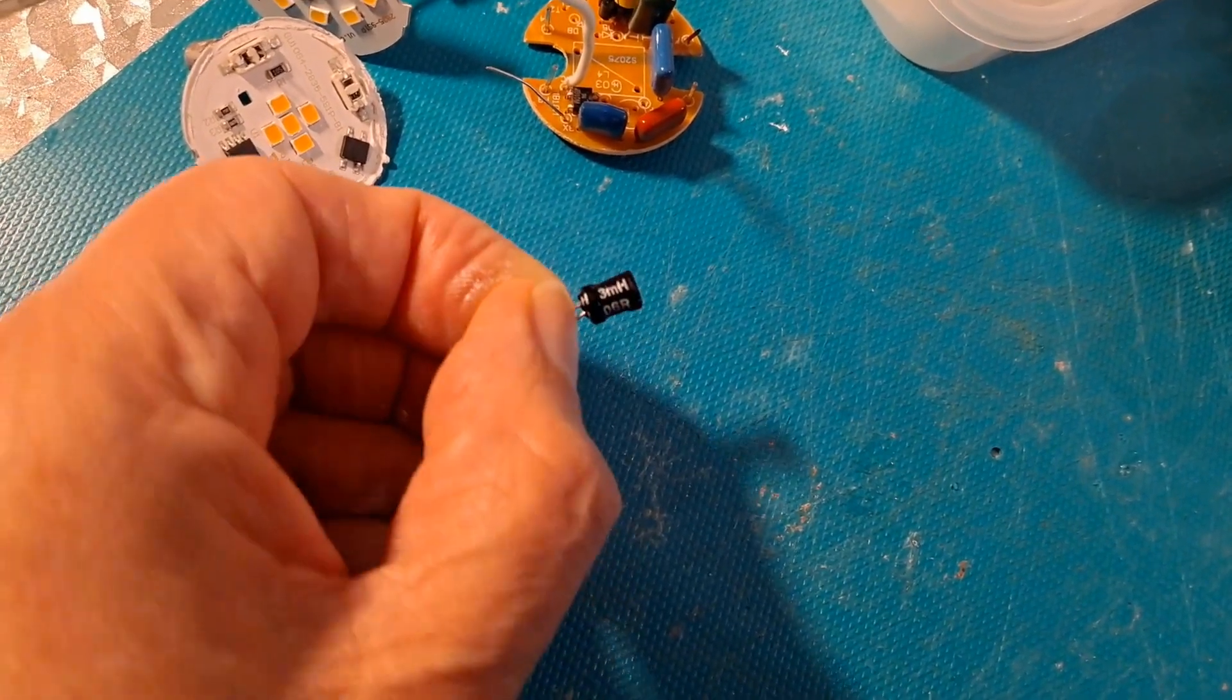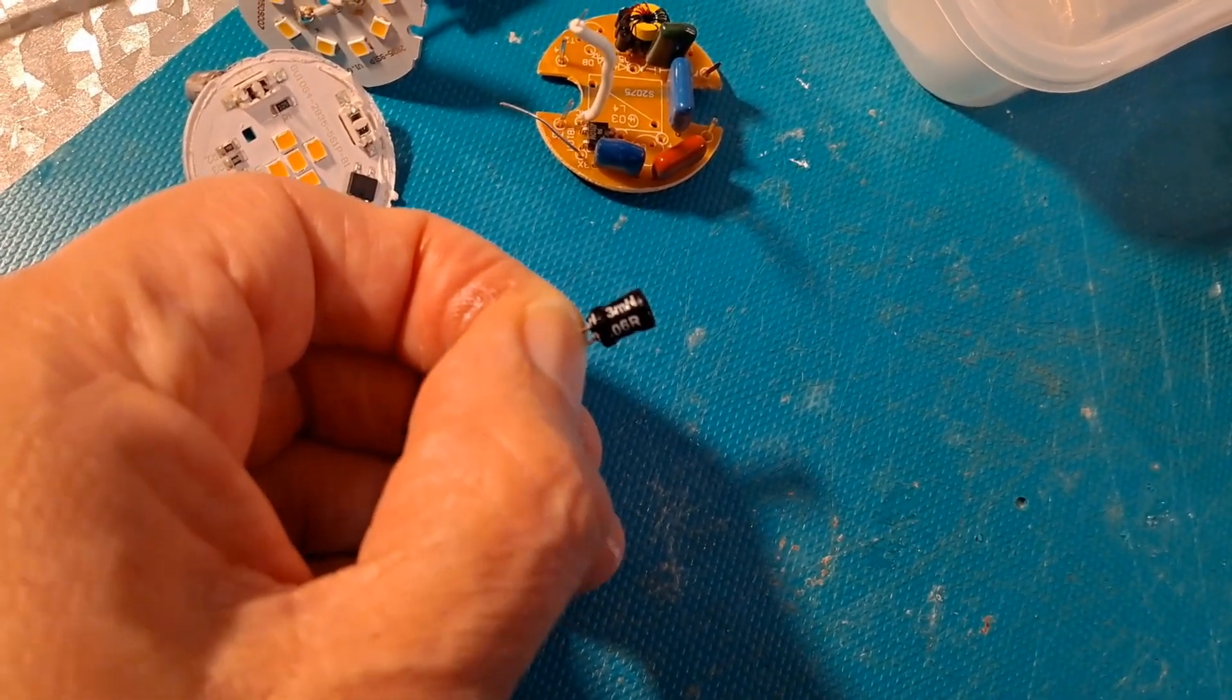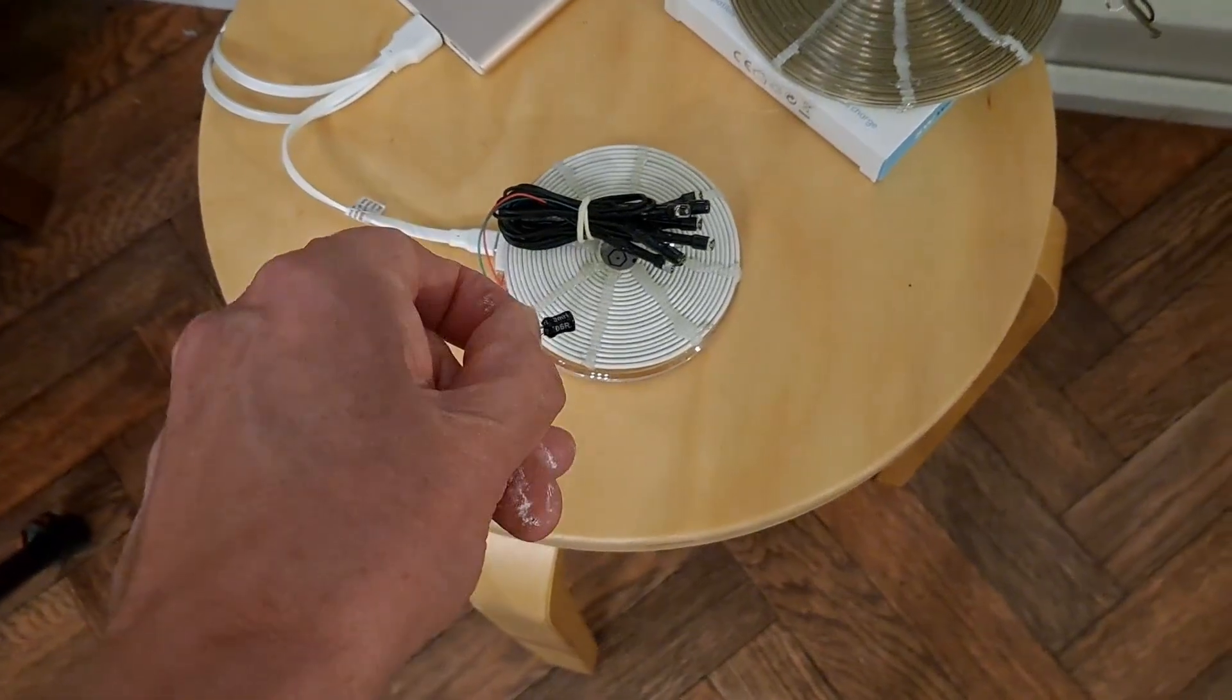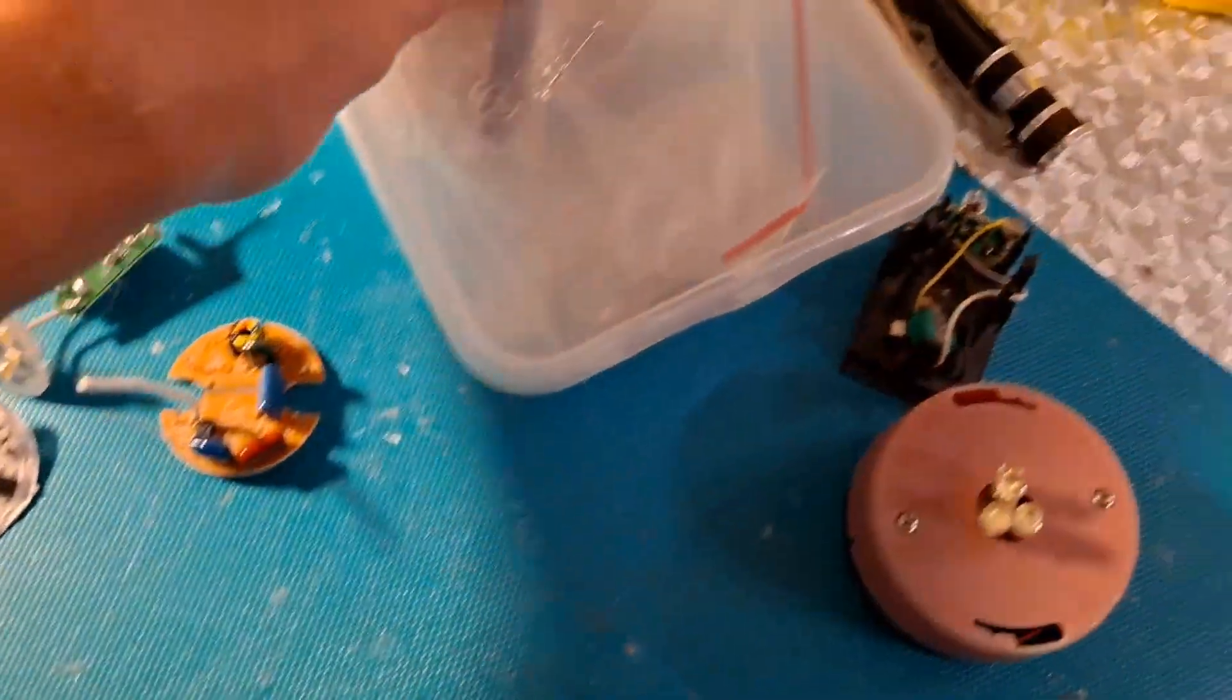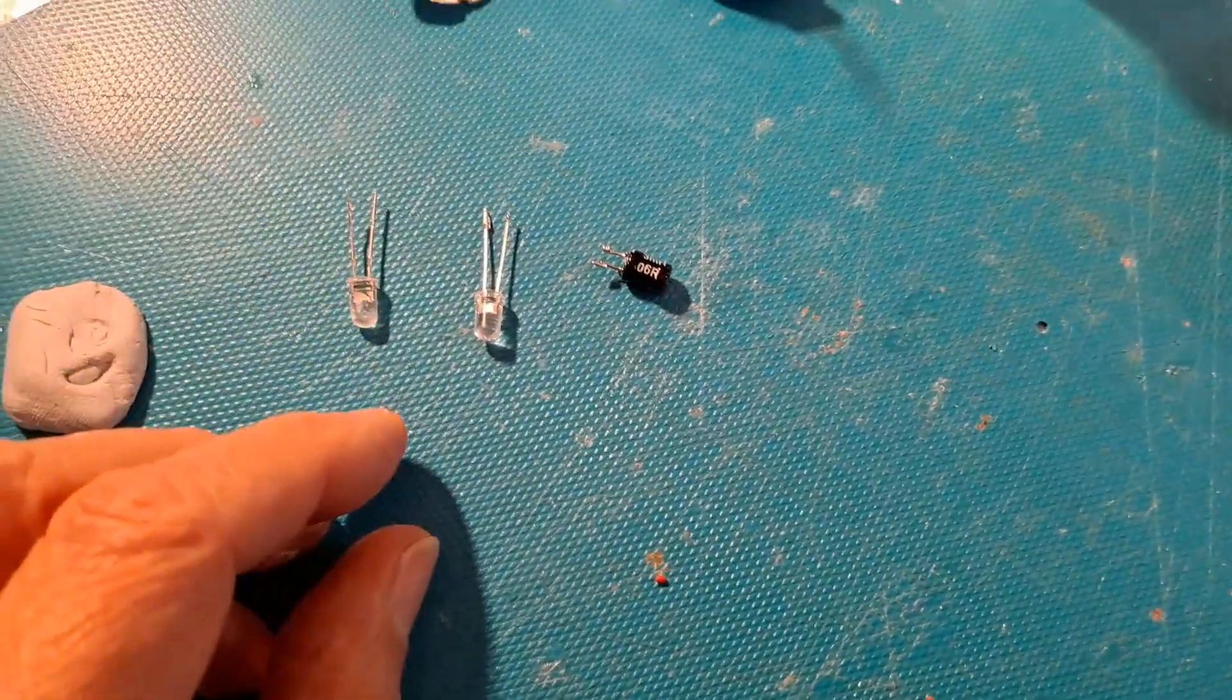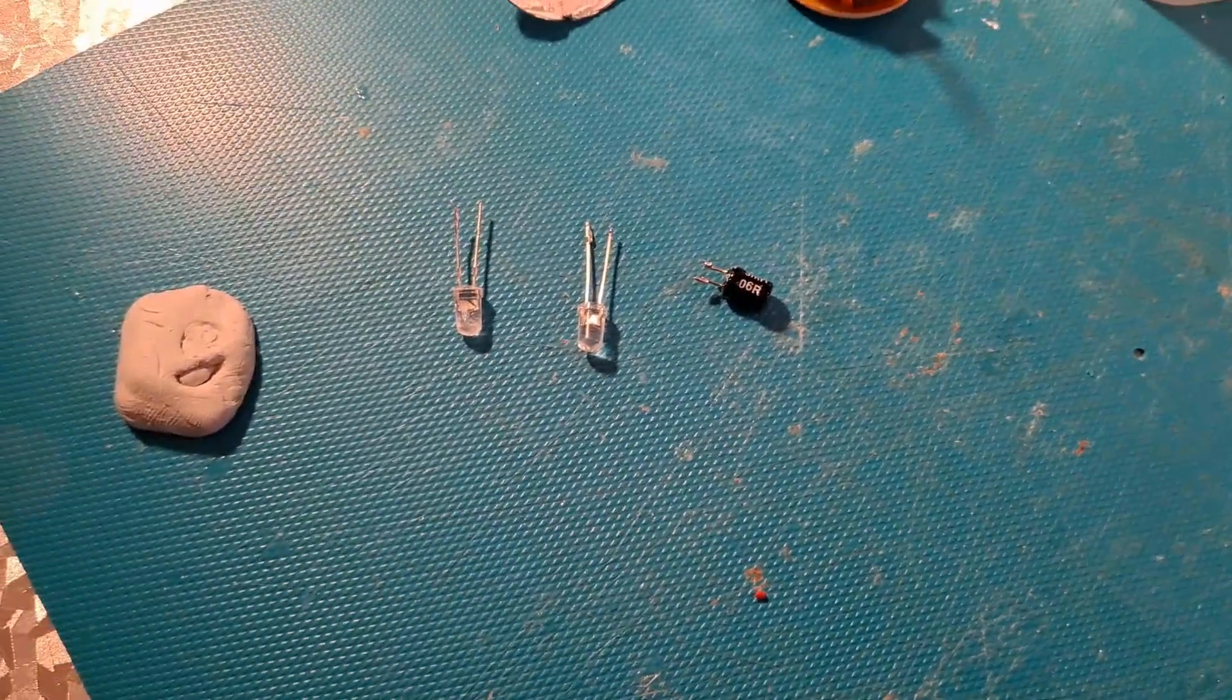Anyway, that one's a three milliHenry choke, which is basically a piece of wire wrapped around a ferrite core. And I thought, well that will probably pick up power. If I solder a couple of LEDs on there, we should get those LEDs lighting up. So that's what we're gonna do.